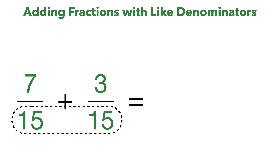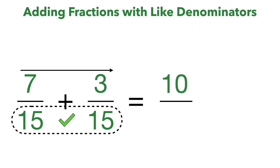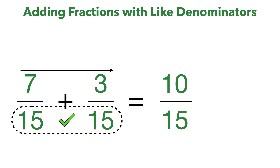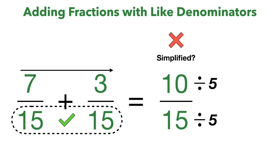Here our denominators are the same — 15 — so we can go ahead and just add across the top. So 7 plus 3 is 10, and then we keep our denominator the same of 15. So 10/15 is our answer, but it is not fully simplified because we can divide both 10 and 15 by 5. So 10 divided by 5 is 2, and 15 divided by 5 is 3.